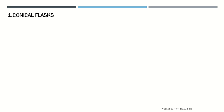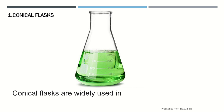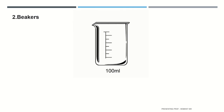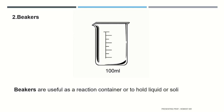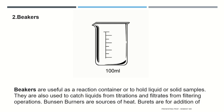The first apparatus is the conical flask. This is the image of a conical flask. Conical flasks are widely used in chemistry laboratories for holding liquids and mixing them by swirling. Second are beakers. Beakers are useful as a reaction container or to hold liquid or solid samples. They are also used to catch liquids from titration and filtrate from filtering operations.